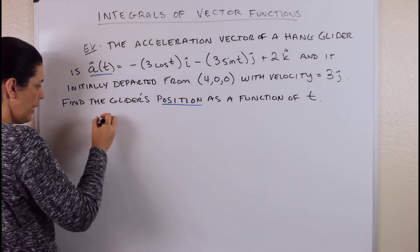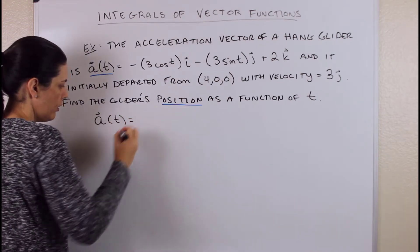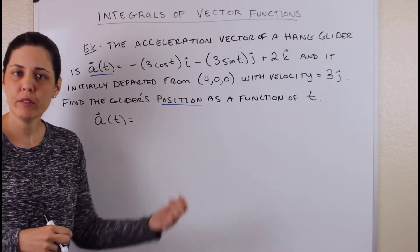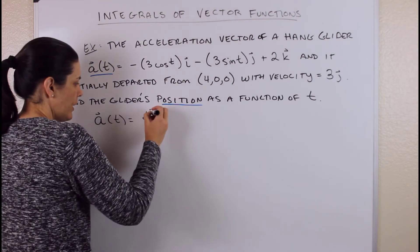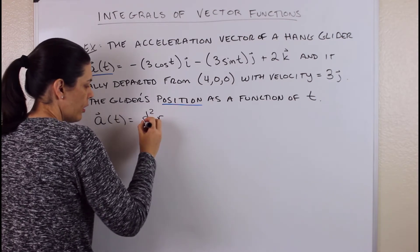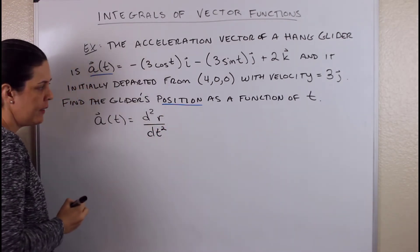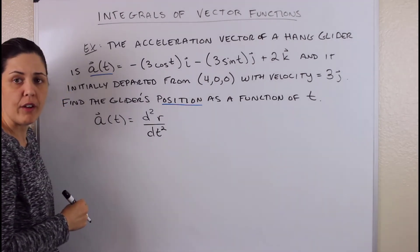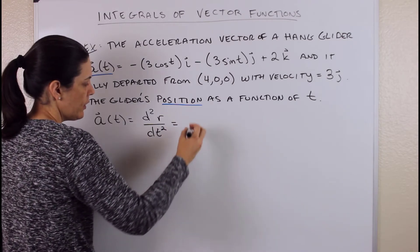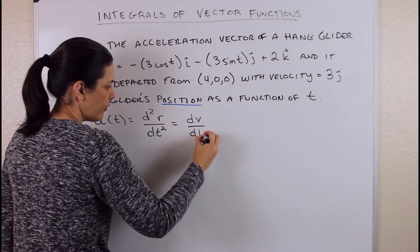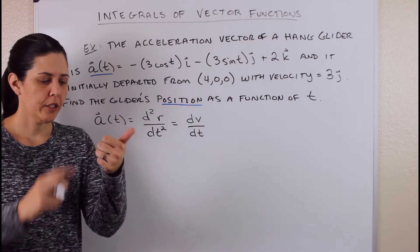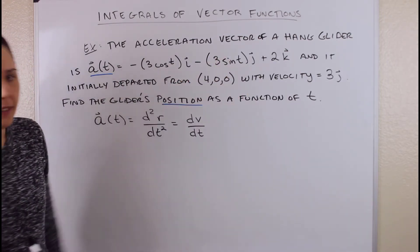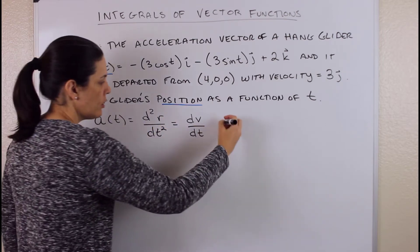We're given acceleration and asked for position. The acceleration is the second derivative of position R with respect to T, and also the first derivative of velocity. So we need to go backwards — integrate. Since we need to get from acceleration to position, we're going to integrate twice, using the given initial conditions along the way.